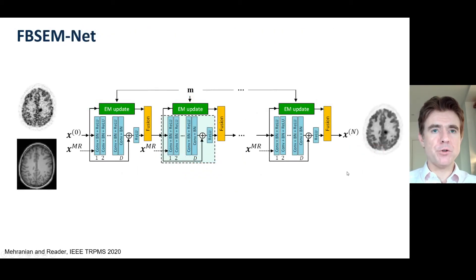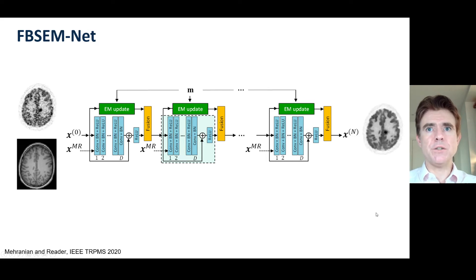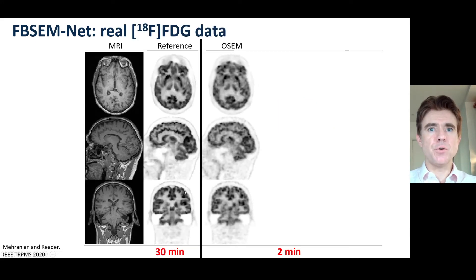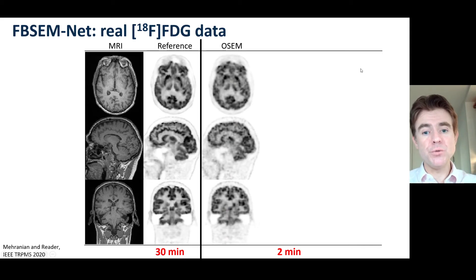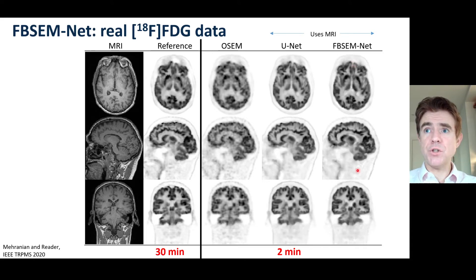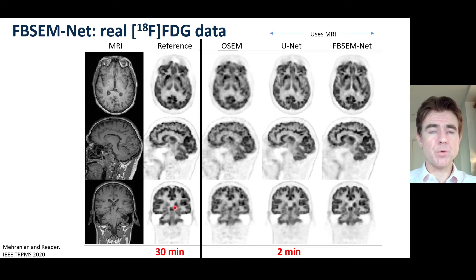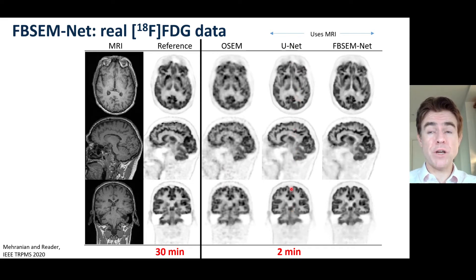Here's a concrete example of that methodology — the method of Abathaz-Maranian, published recently, for MMR data. You can see the CNNs in parallel with the EM updates and the fusion steps. The high-quality reference is 30 minutes of MMR FDG data. This is the conventional OSEM reconstruction if we only have two minutes of data. Using the methods I've just been describing, the unrolled MAP-EM — here it's called FBSEMnet — is delivering reconstructed image quality that very favorably compares to the high-quality reference and obviously outperforms the OSEM reconstruction. I also point out here that a conventional post-reconstruction UNET also does extremely well.